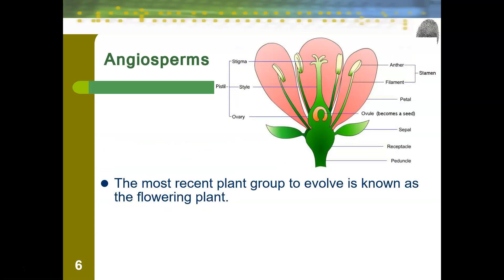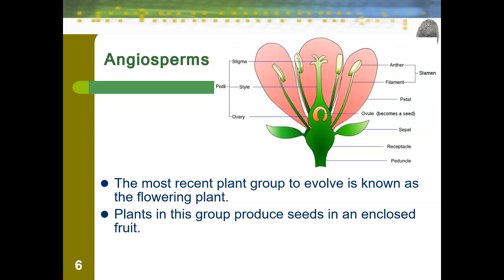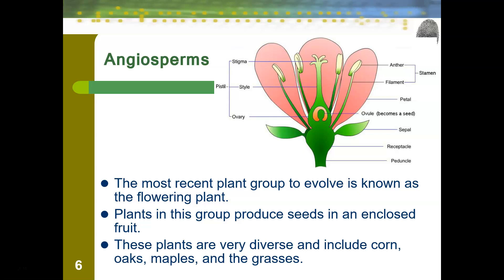Angiosperms are the most recent plant group to evolve and are our flowering plants. Plants in this group produce seeds in an enclosed fruit. They are very diverse and include things you might not think of as flowering plants, like corn, oaks, maples, and even grasses. Some flowering plants contain both male and female parts. The pistil, stigma, style, and ovary are the female parts of the plant, while the stamen, anther, and filament are the male parts.